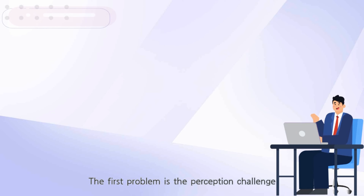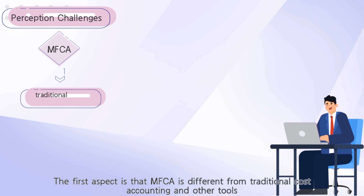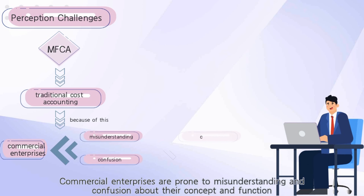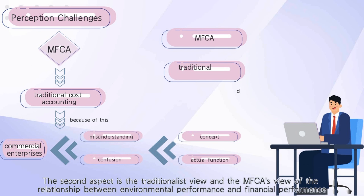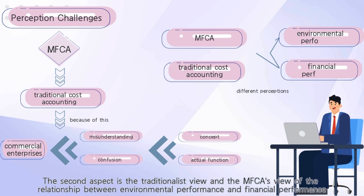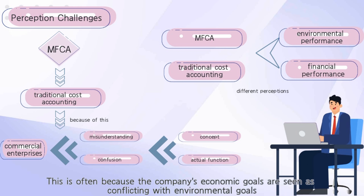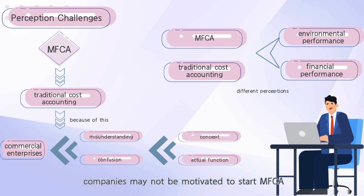The first problem is the perception challenge, divided into two aspects. The first aspect is that MFCA is different from traditional cost accounting and other tools, so commercial enterprises are prone to misunderstanding and confusion about its concept and function. The second aspect concerns the traditionalist view: traditionalists see environmental performance and financial performance as conflicting, assuming that improvements in environmental performance will lead to declines in financial performance.